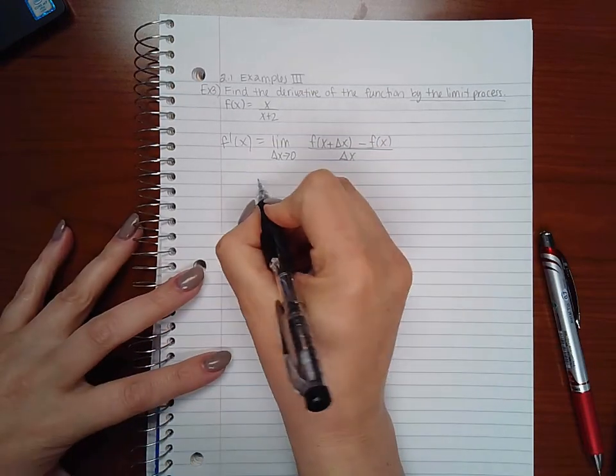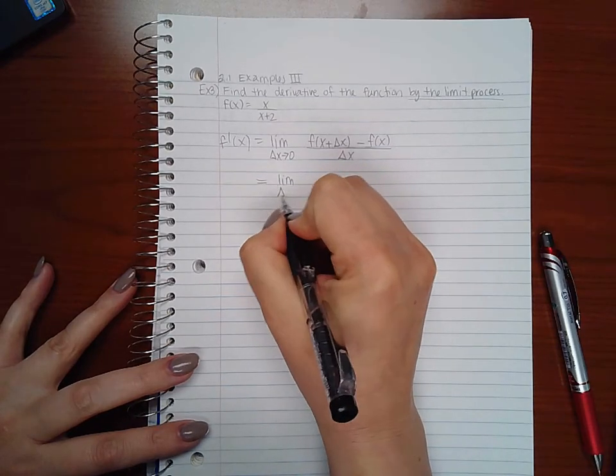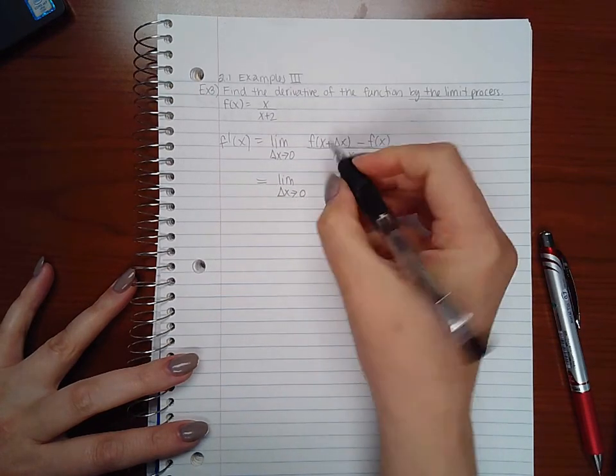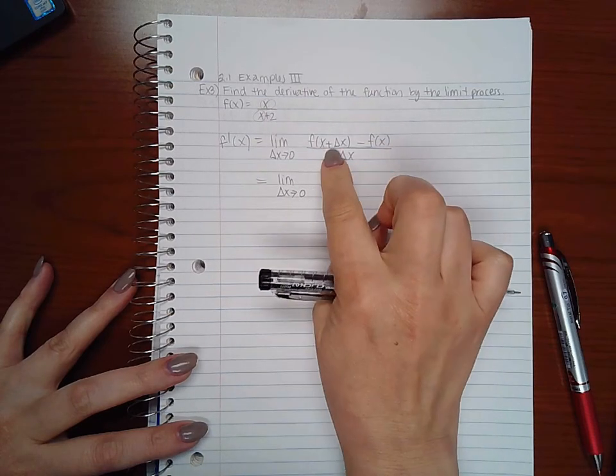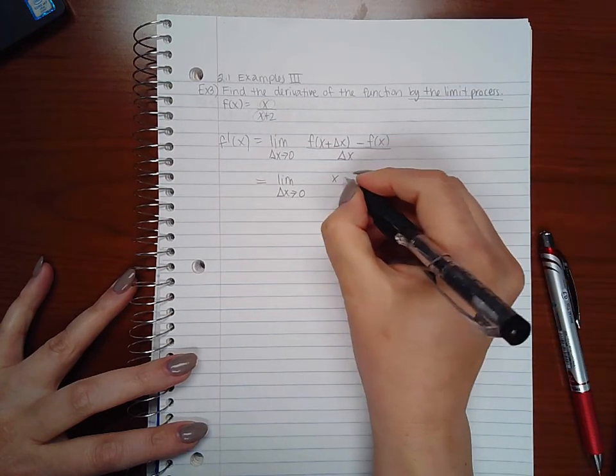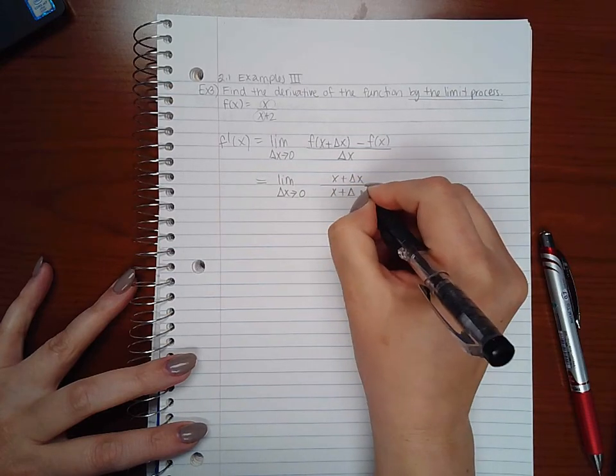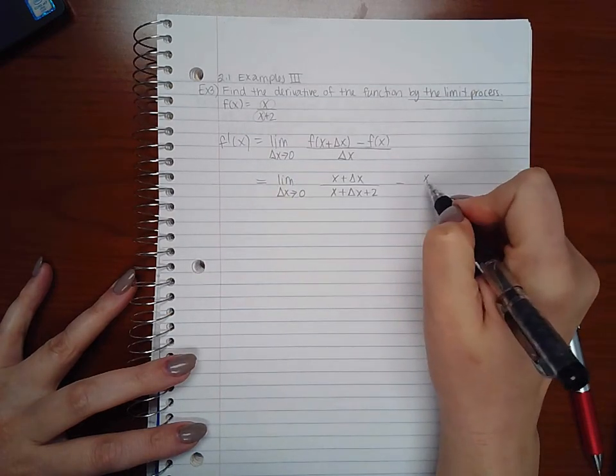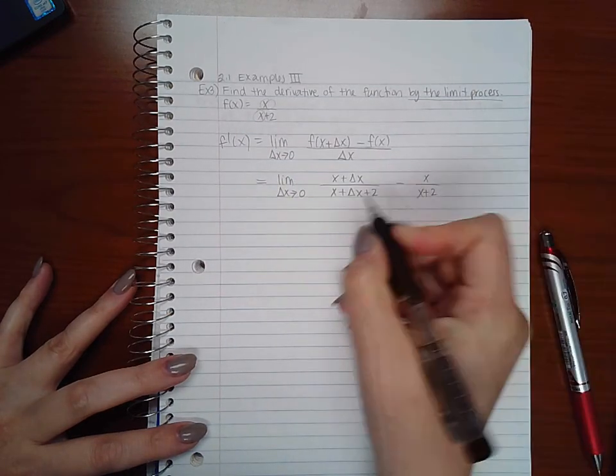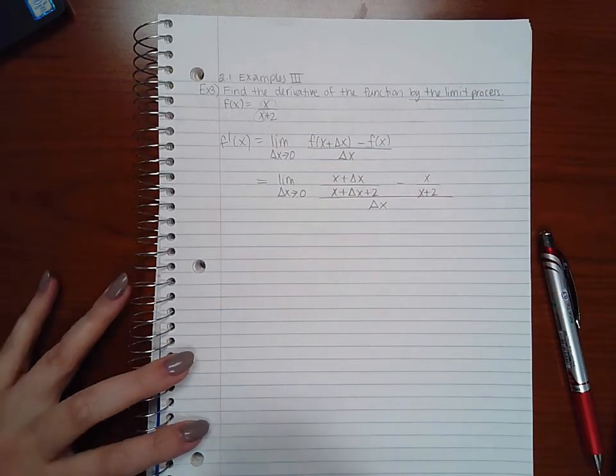I'm going to go ahead and use the function that I was given to find this limit. So I'm going to replace each x with x plus delta x. And then here I'm just going to use the function itself. And this all has to still be over delta x.